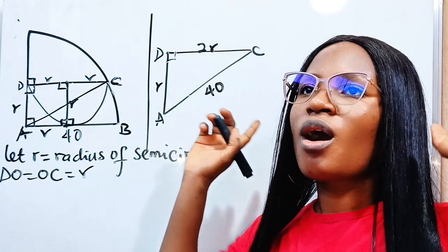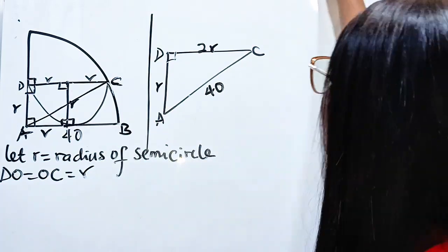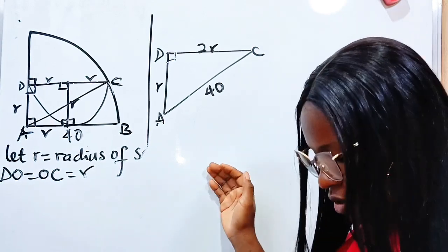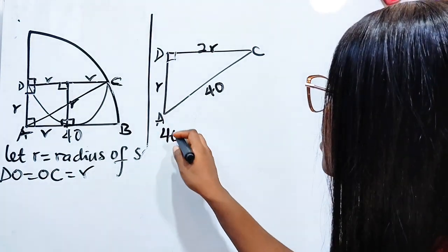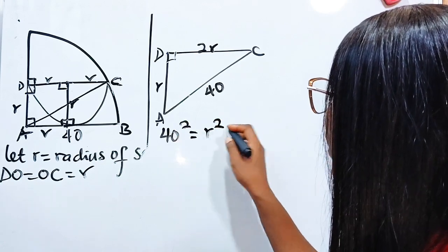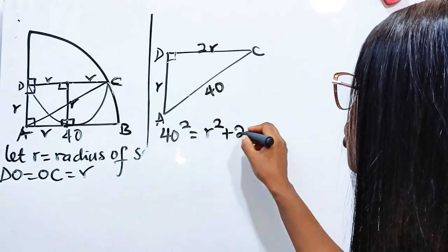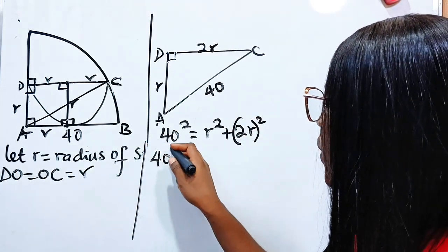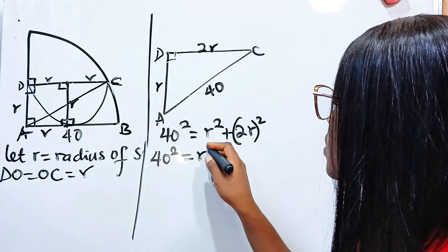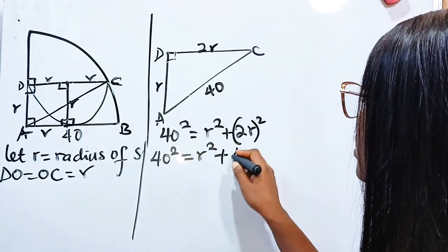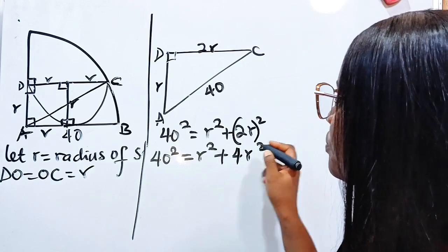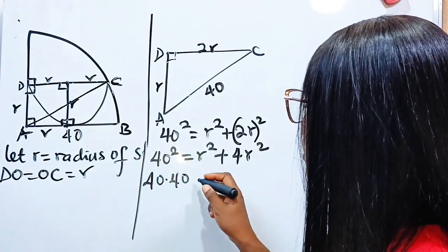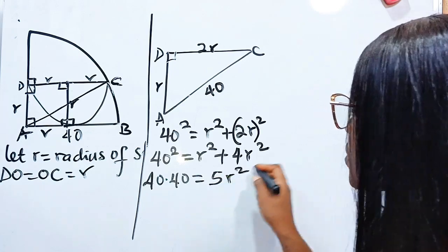Now using the Pythagorean theorem: 40² is equal to r² plus (2r)². 2r squared is 4r². Now 40 squared is 40 multiplied by 40, which equals 5r².